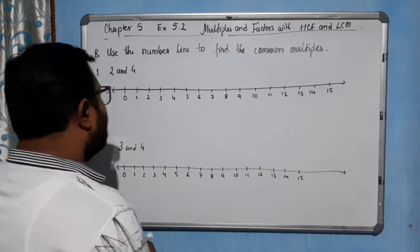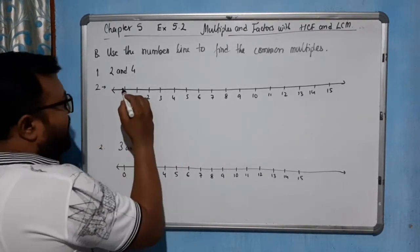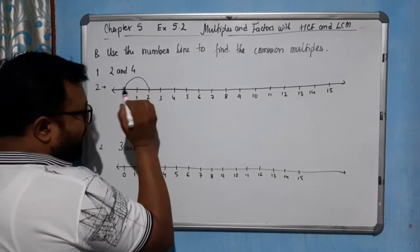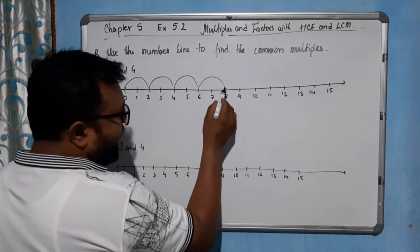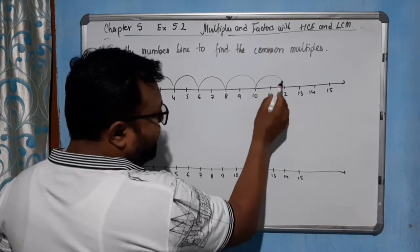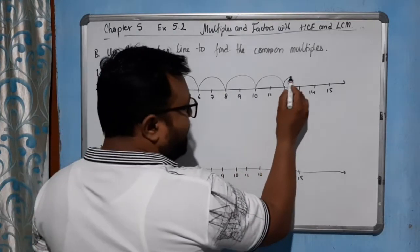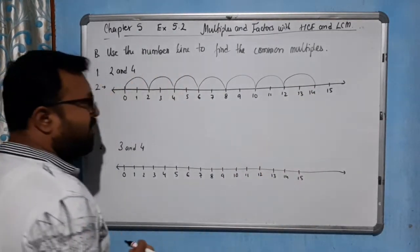Now see for 2, let's start from here. So 2×1=2, 2×2=4, 2×3=6, 2×4=8, 2×5=10, 2×6=12, 2×7=14. So up to 14 here.